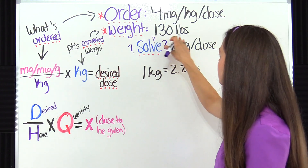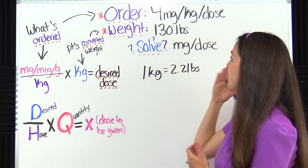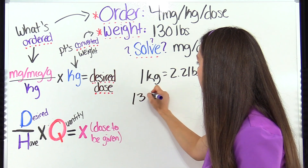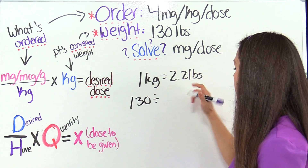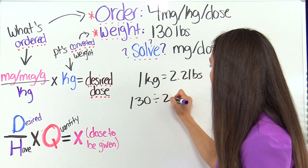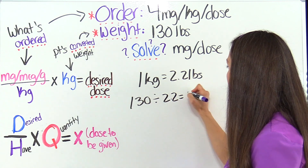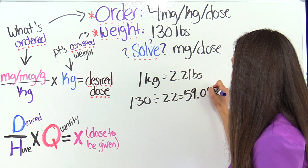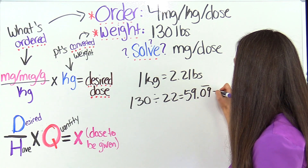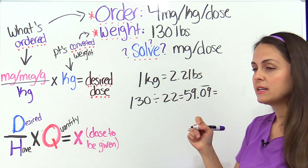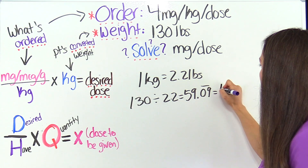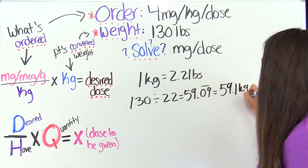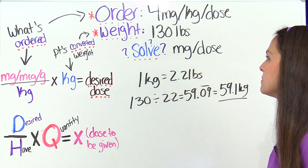In order to get 130 pounds to kilograms, I'm going to take 130 and divide it by 2.2. When you divide that out, you get 59.09 repeating, and we're going to round to the nearest tenth, so we get 59.1. So that's our patient's weight in kilograms.